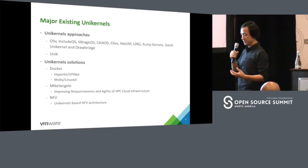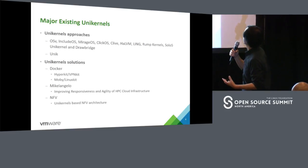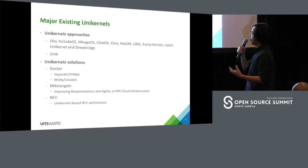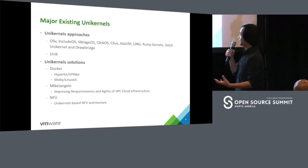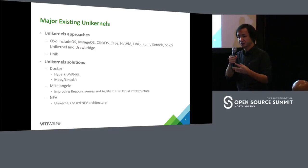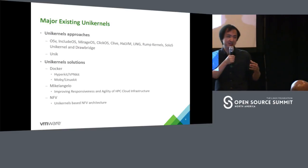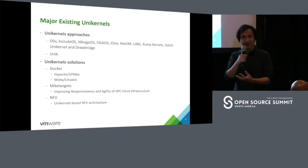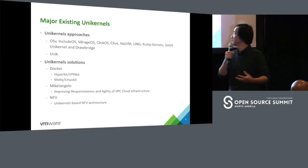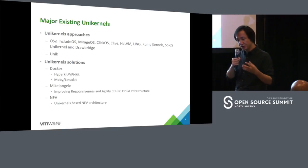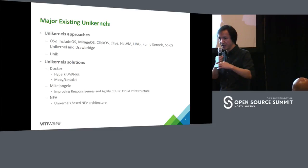There are a lot of unikernel approaches so far: OSv, IncludeOS, Rump kernel, and Drawbridge — which is from Microsoft for Windows. There's also Unik, which is not a unikernel itself but an open-source tool that can help you compile your application into some existing unikernels like OSv and Rump kernel. This can help you deploy unikernel images across different clouds and even on IoT devices.